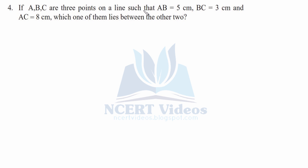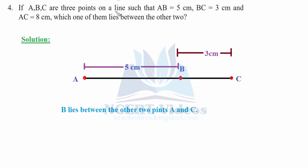Question four: if A, B, C are three points on a line such that AB equals 5 cm, BC equals 3 cm, and AC equals 8 cm, which one of them lies between the other two? On the line AC, AB is 5 cm and BC is 3 cm. Since 5 plus 3 equals 8 cm, which matches AC, B lies between A and C. This was question four.